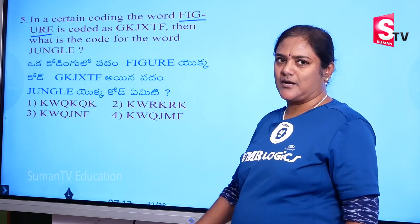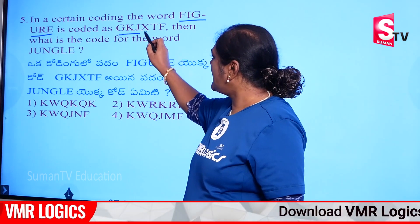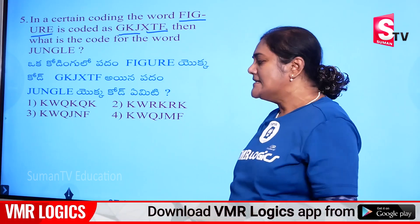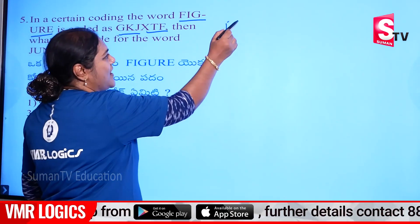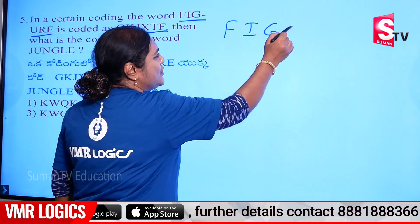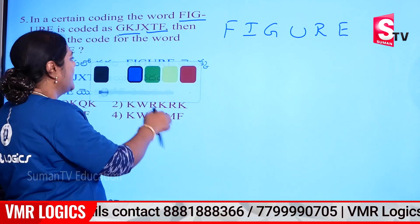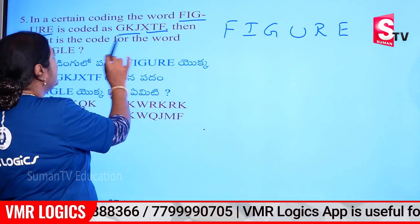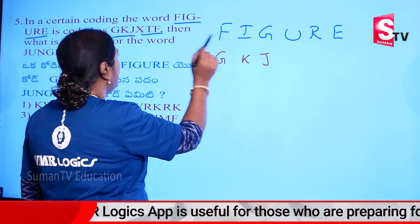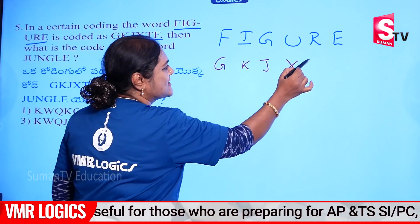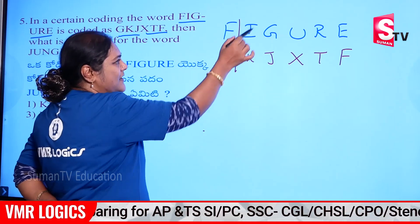Now, the next model — given the figure, the code is G, K, J, X, T, F. In this coding question, the code letters correspond to each other: G K J and G K J, X T F and X T F. Now let's find the opposites — what logic is being applied here?